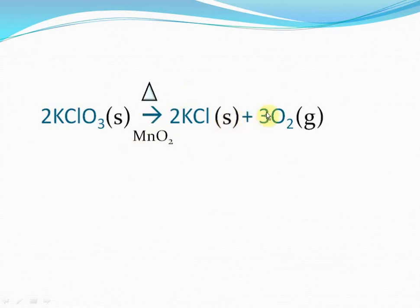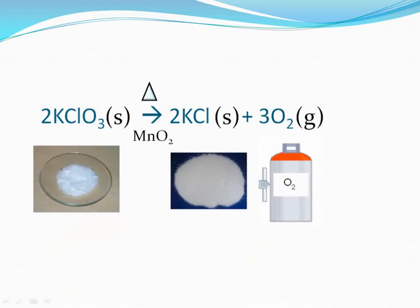These kinds of reactions are complete depictions of exactly what is happening — the state of the reactant and product is known, the catalyst is known, and the heating symbol is also indicated. That was about the chemical notations used in chemical reactions.